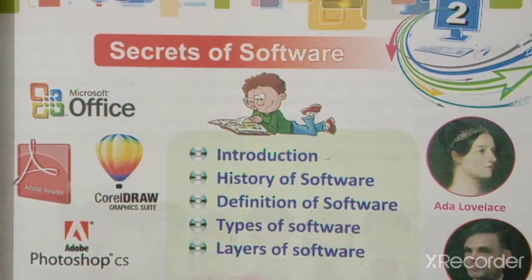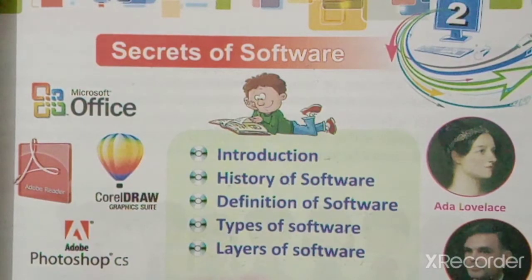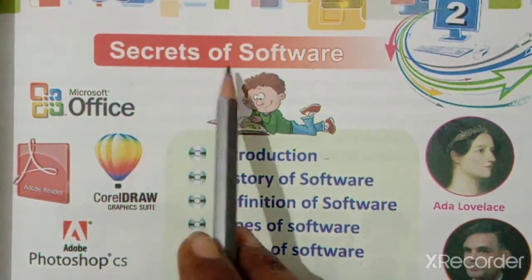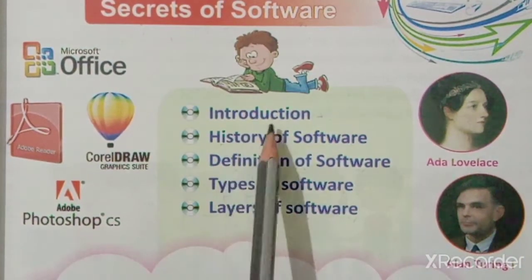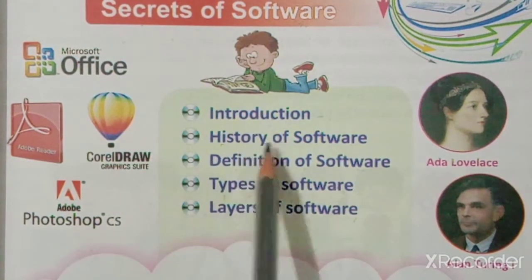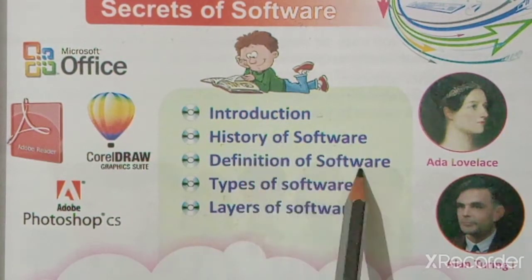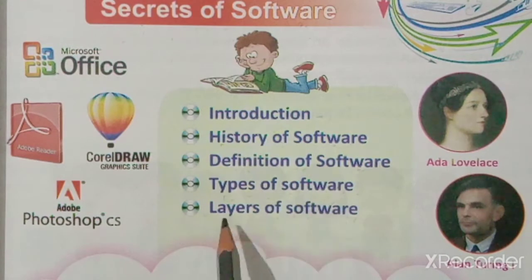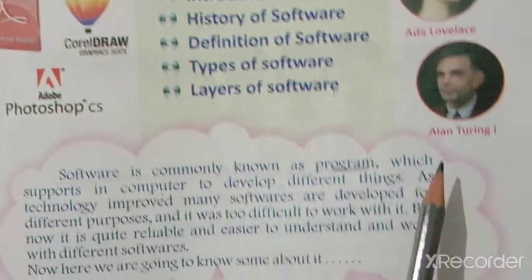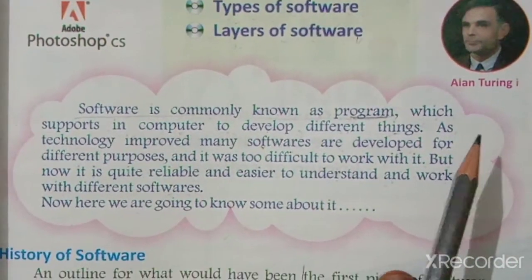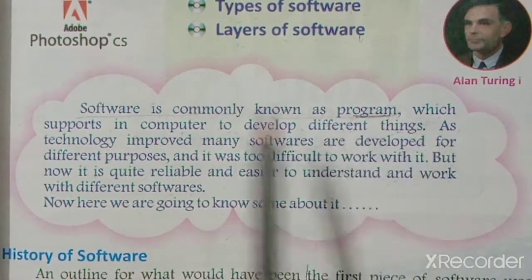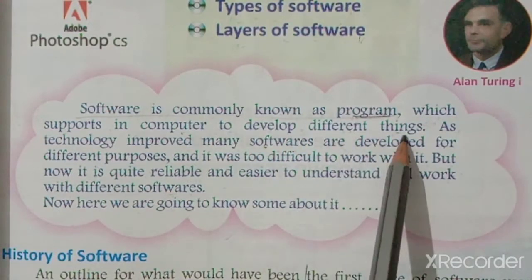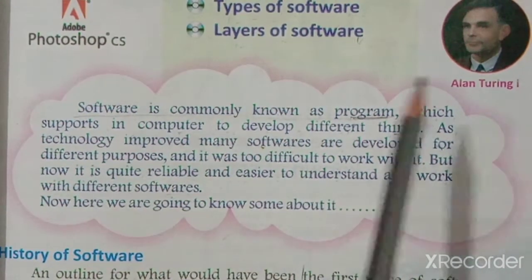Dear students, today we have to start the second chapter of the computer, and the chapter name is 'Secrets of Software.' In this chapter we have to study the introduction, history of software, definition of software, types of software, and layers of software. Software is commonly known as a program which supports the computer to develop different things.